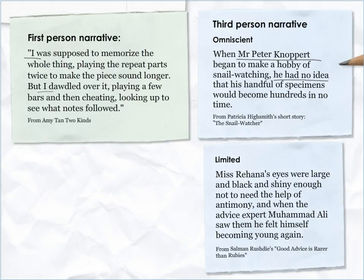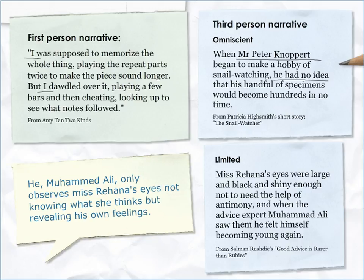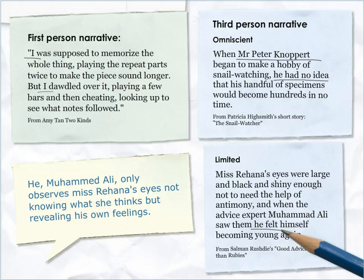Third person limited example: 'Miss Rihanna's eyes were large and black, and shiny enough not to need the help of antimony. And when the advice expert, Muhammad Ali, saw them, he felt himself becoming young again.' This is limited third person narrative: Muhammad Ali only observes Miss Rihanna's eyes, not knowing what she thinks, but revealing his own feelings.